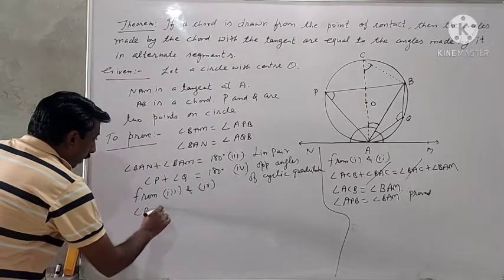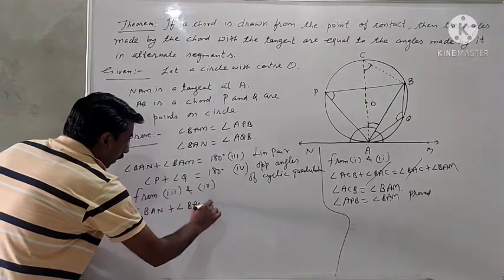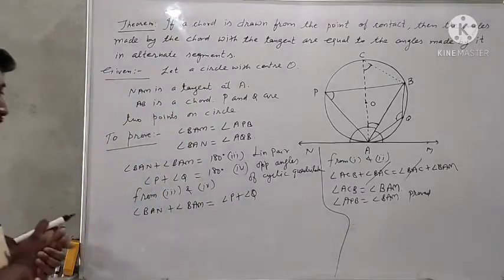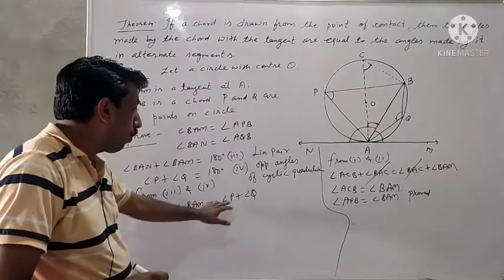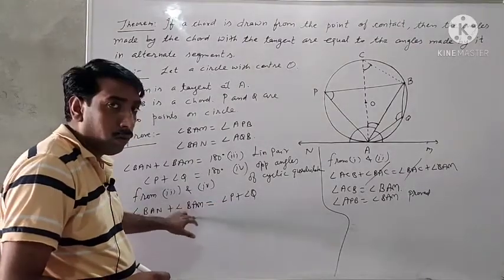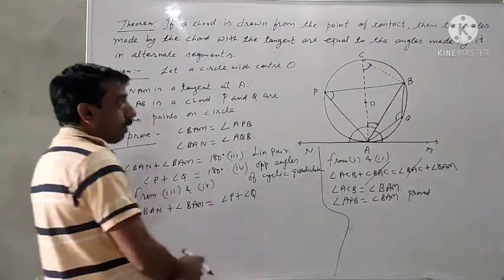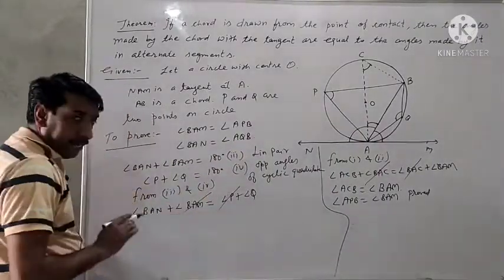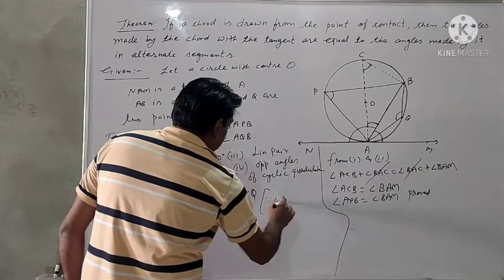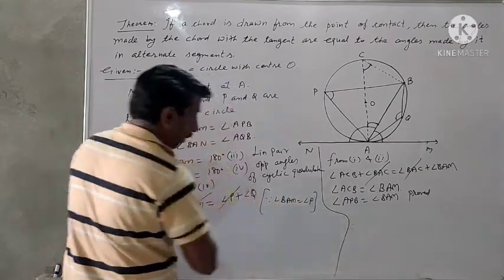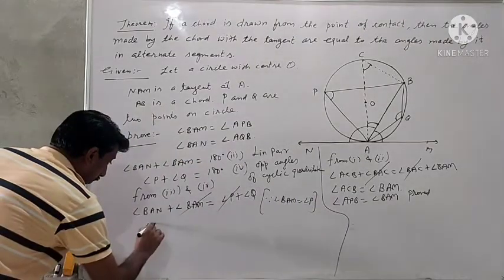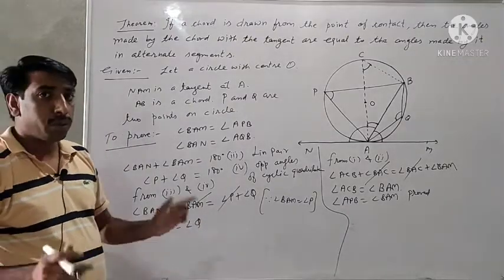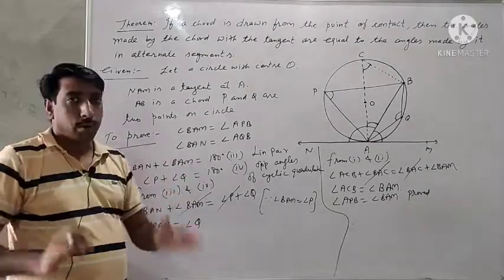From equations three and four, we have angle BAM plus angle BAN equal to angle P plus angle Q. Since we have already proved angle BAM equals angle APB, we can cancel angle P from both sides. The remaining result gives angle BAN equal to angle AQB. This was the same result that was to be proved. Now we have proved this theorem.